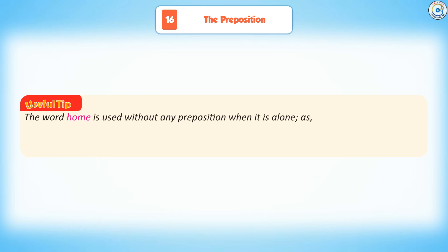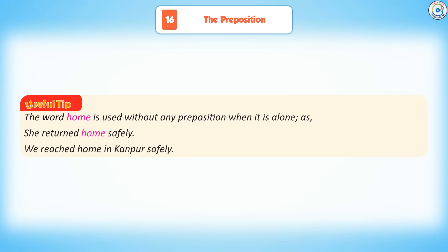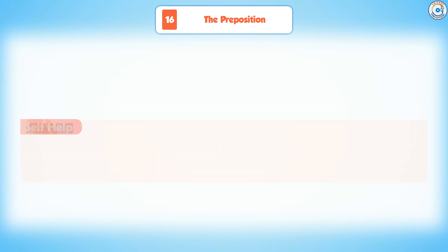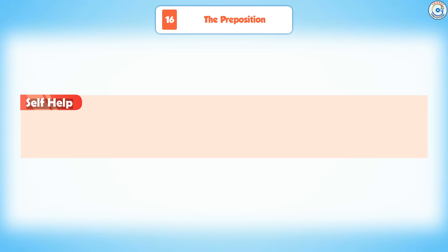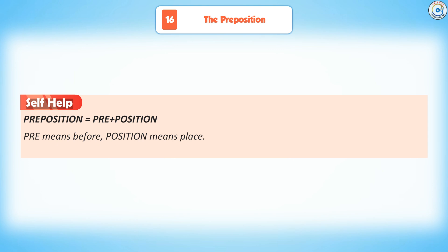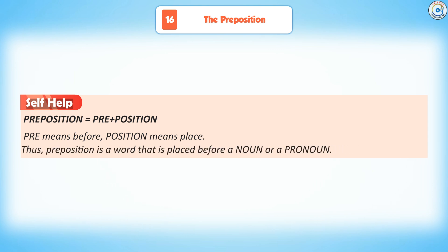Useful tip: The word 'home' is used without any preposition when it stands alone. For example: She returned home safely. We reached home in Kanpur safely. Self-help: Pre means before, and position means place. Thus, preposition is a word that is placed before a noun or a pronoun.